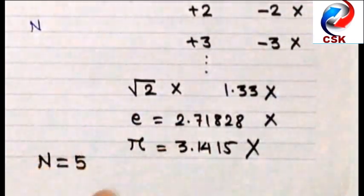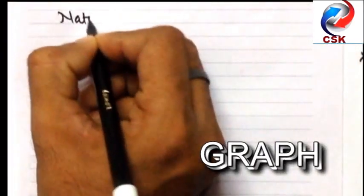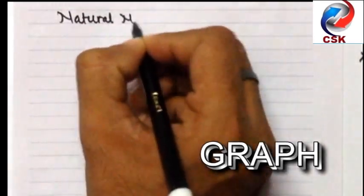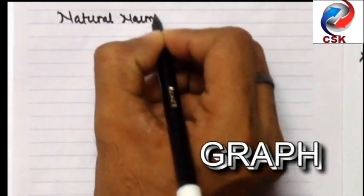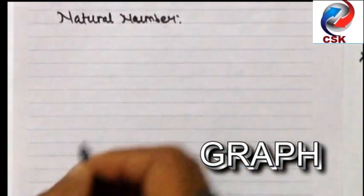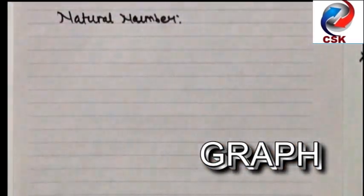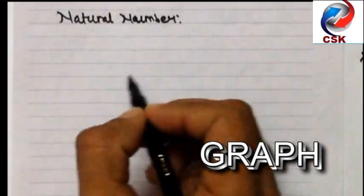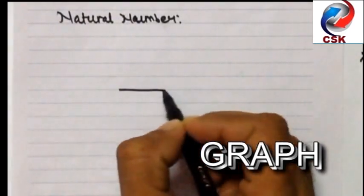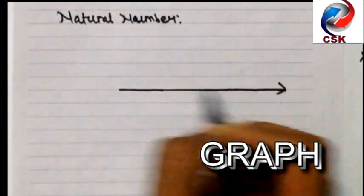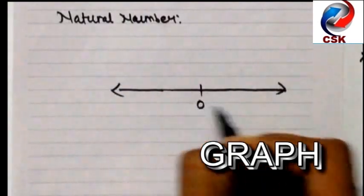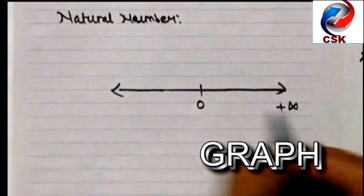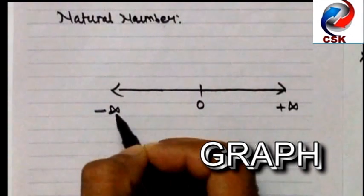Now let's move on and try to understand the natural number in graphical representation. To understand this, I am drawing the x-axis for a natural number. So this is the x-axis where midpoint is 0, rightmost is plus infinite and leftmost is minus infinite.